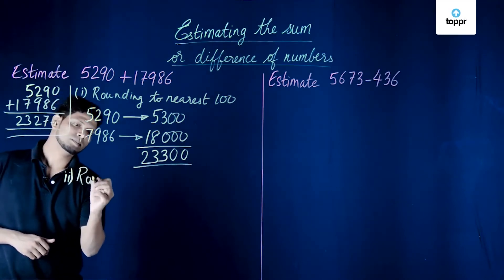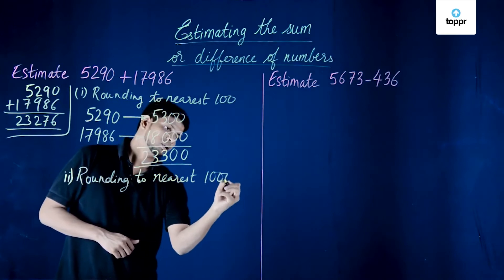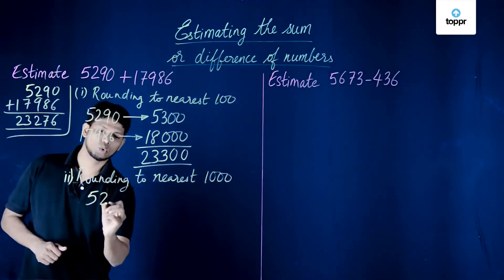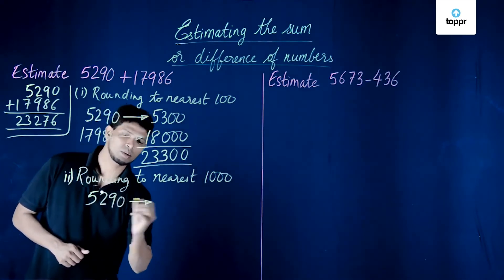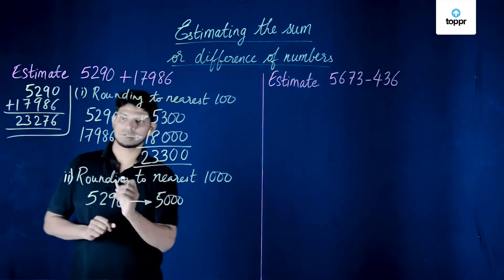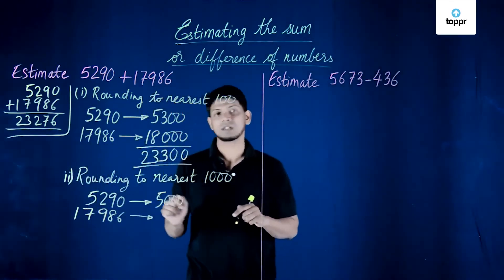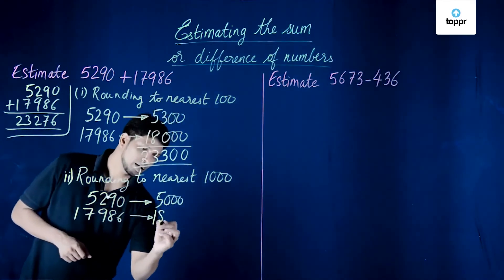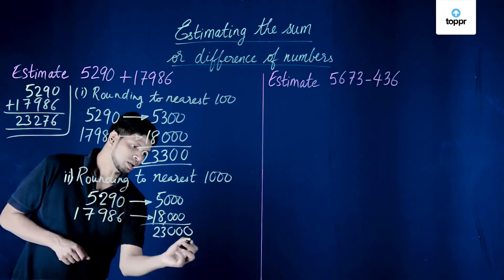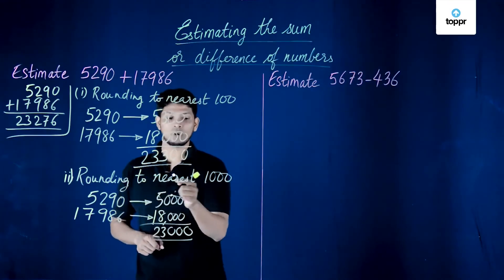Now rounding to the nearest thousand: 5290 lies between 5000 and 6000 and is closer to 5000, so it becomes 5000. And 17986 lies between 17000 and 18000 and is closer to 18000, so it becomes 18,000. When we add these, the estimated sum is 23,000.